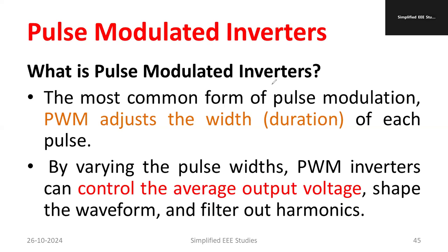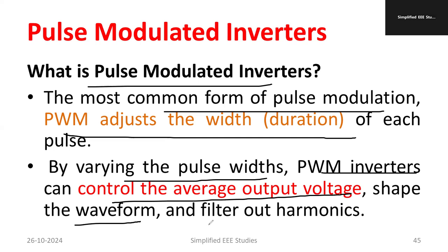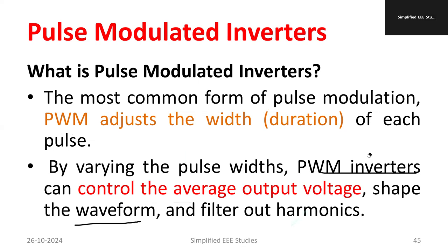PWM is the most common type of modulation, which adjusts the duration of the on period. The duty cycle is directly proportional to the on period, and by adjusting the on period you control the output voltage. By varying the pulse width, the PWM inverter can control the average output voltage and even its shape. Compared to other types of inverters, a major advantage is that the harmonic content becomes very less — which is why the pulse width modulated inverter is the most popularly used inverter.